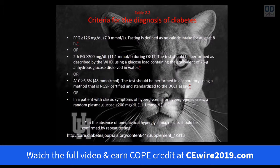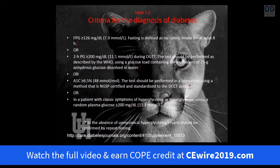The criteria for diagnosing diabetes are: a fasting plasma glucose of 125 mg/dL or greater — fasting defined as no caloric intake for at least eight hours; or a two-hour plasma glucose of 200 mg/dL or greater during an oral glucose tolerance test; or an A1C of 6.5% or greater; or a patient with classic symptoms of diabetes and a random plasma glucose of 200 mg/dL or greater.